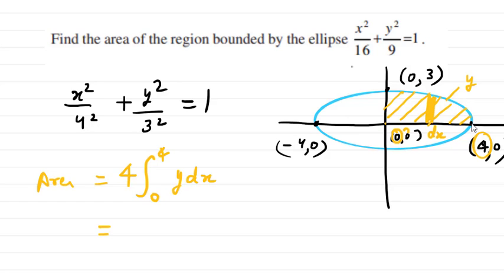Then we have y dx. First, you have to find y. You will get y from this equation. Let me explain this. We have x²/16 + y²/9 = 1.